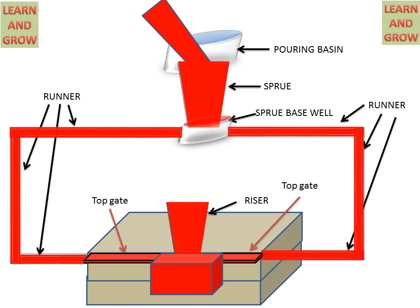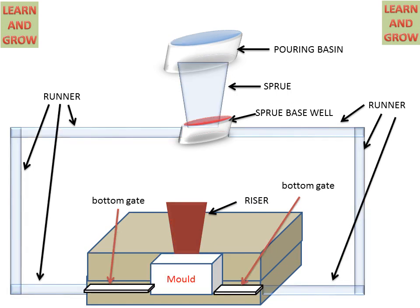Now if we replace the top gate with a bottom gate or parting line gate, the figure changes. In this system, the gates are not on top — they are at the bottom of the cavity, so the cavity is filled from the bottom.